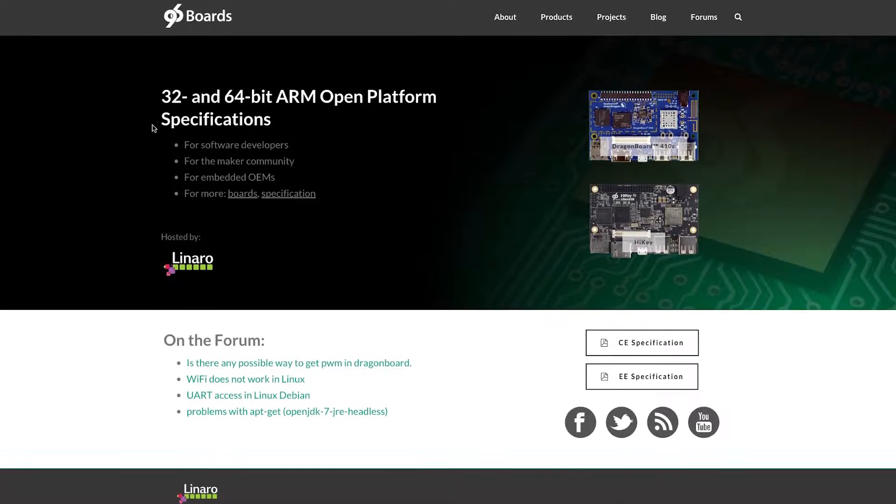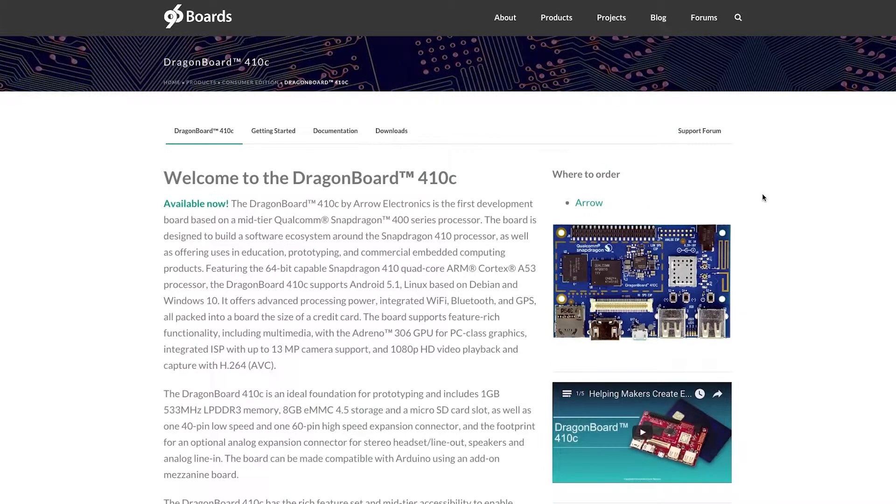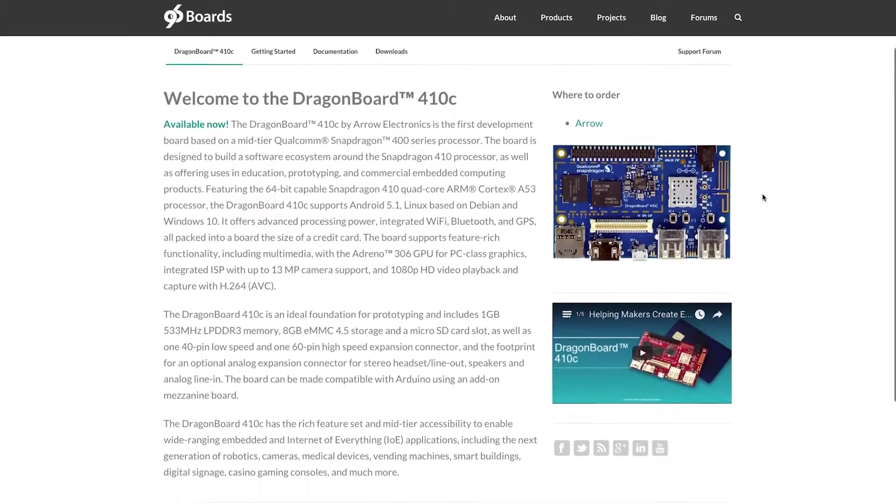96 Boards is an open specification to define an ecosystem of low-cost, small footprint boards. They're all based on an ARM Cortex-A core, and they have standardized I/O buses and interface placement.